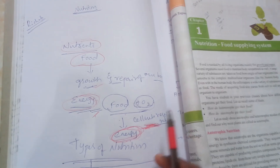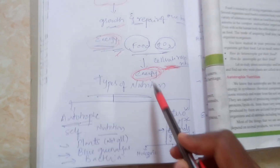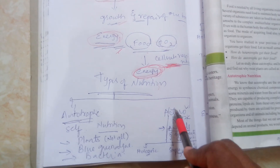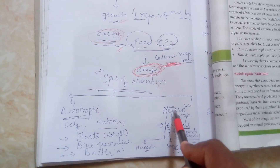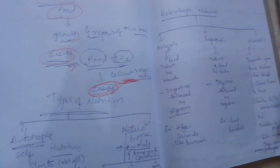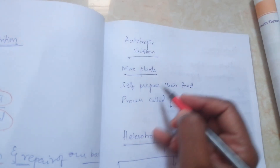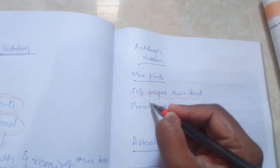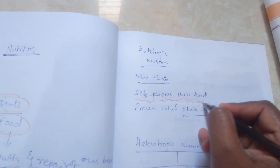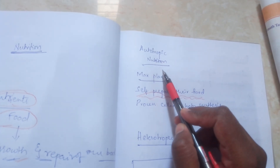The complete uptake of nutrients into the body is called nutrition, and that food helps with the growth and repair of our body. Now we are going to see the types of nutrition. There are majorly two types: autotrophic nutrition and heterotrophic nutrition. Autotrophic nutrition is where the organism self-prepares its own food. The type of nutrition in which organisms prepare their own food is called autotrophic nutrition.